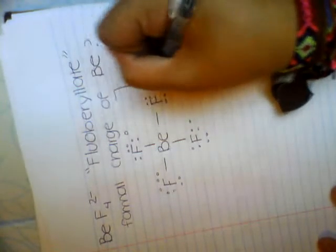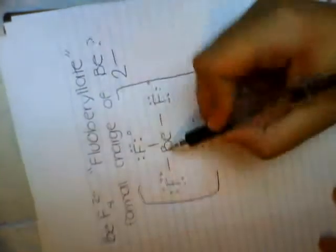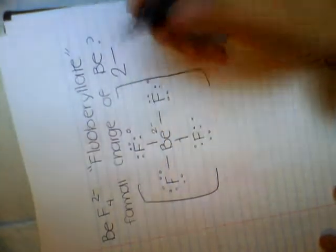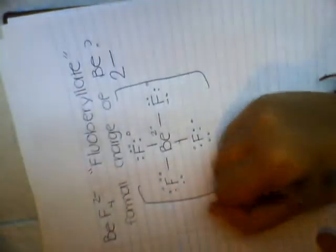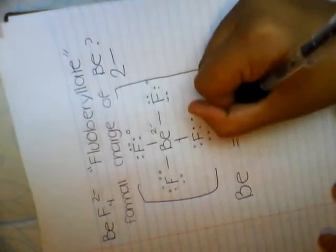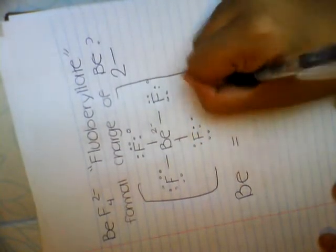While these are all neutral atoms, the whole compound is going to have a negative 2 charge because Be has 2 more electrons right here. This means that Be will have a formal charge of negative 2.